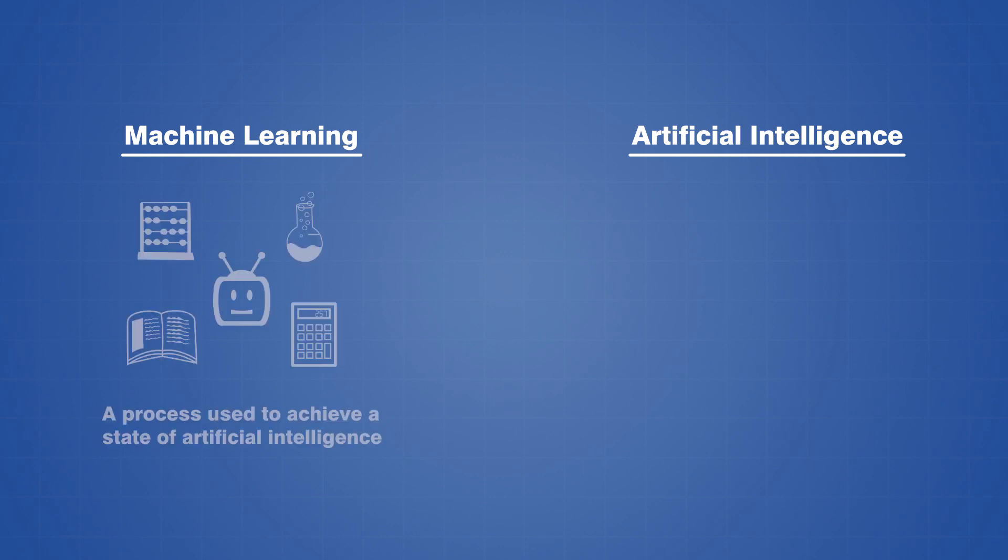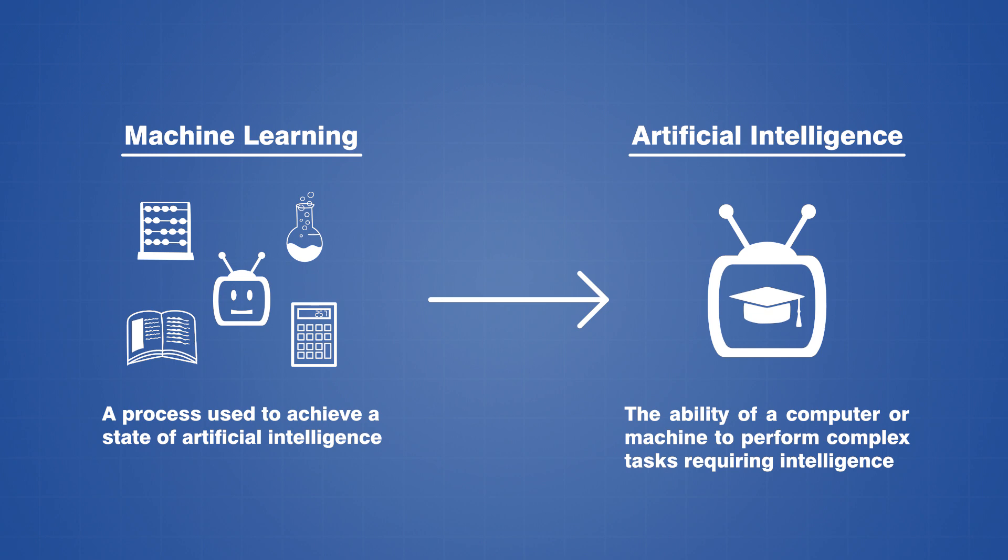Basically, machine learning is a subset of artificial intelligence that is responsible for actually achieving a state of AI, whereas AI itself describes the end product of machine learning, where a computer or machine exhibits intelligent behavior.